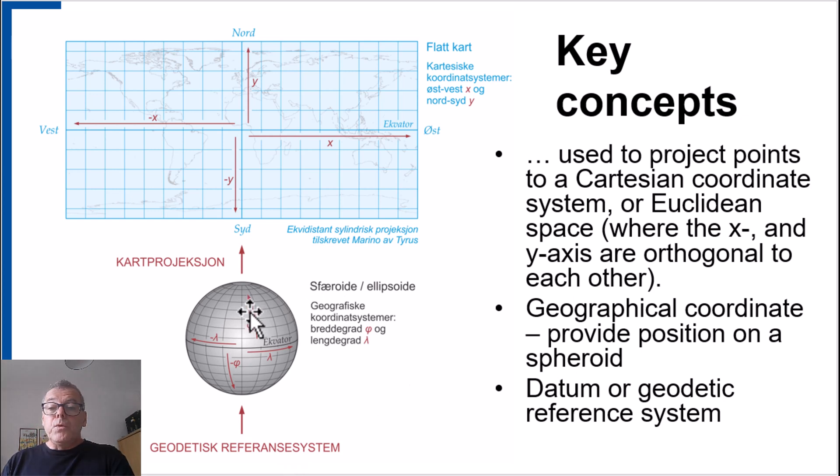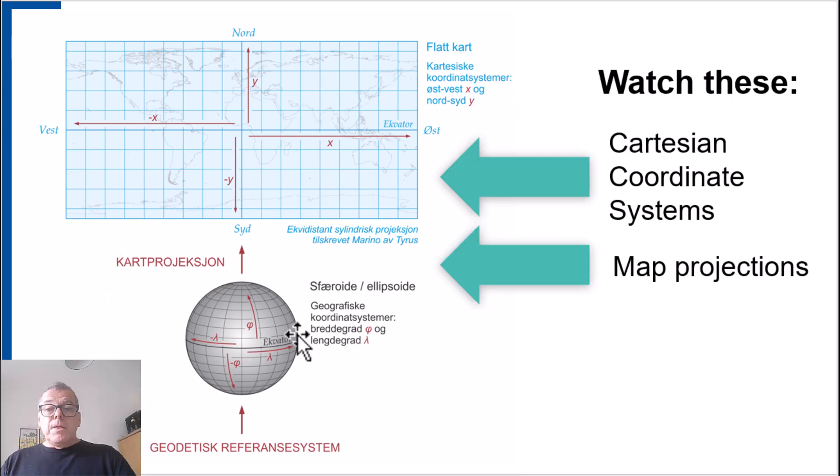Then we've been through geographical coordinates, which gives them the position on the spheroid. But very often in GIS, we are using a plan map using Cartesian coordinates. So to get there, we need to go through a map projection. Then both map projection and characteristics of a Cartesian coordinate system will be covered in two different videos. So you should also watch these.